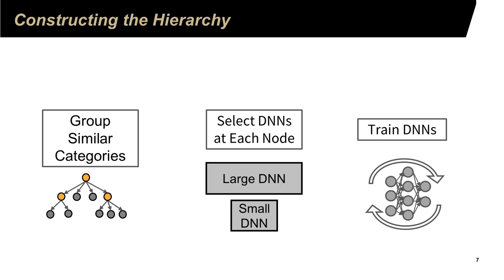This slide shows the three major steps for constructing the hierarchy. The first step is to find similar categories of objects and group them together. Note that we do not set a restriction about the fan-out of each node — a node may have two, three, or more children. The fan-out is determined by the data.